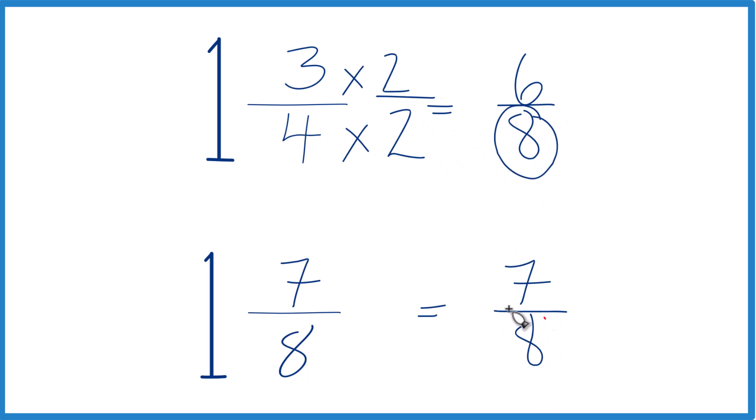But now we have the same denominator, we can compare those numerators. And you see that 7, that's larger than 6. So 7/8, that's larger than 6/8, only by 1/8, but it's still larger.